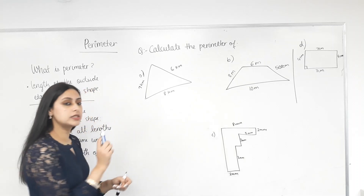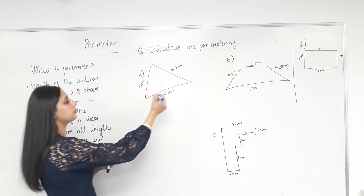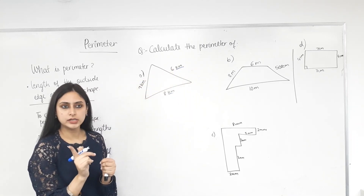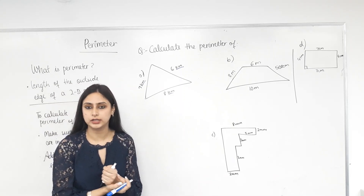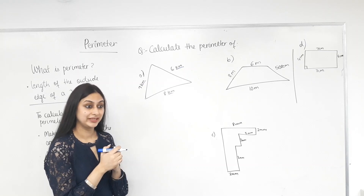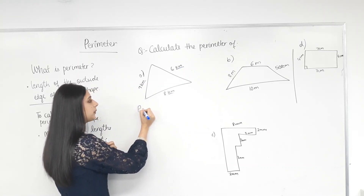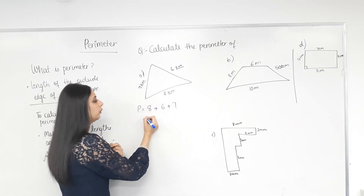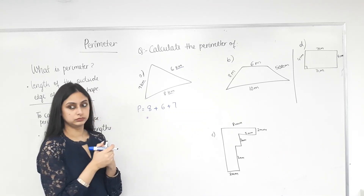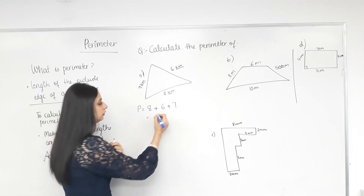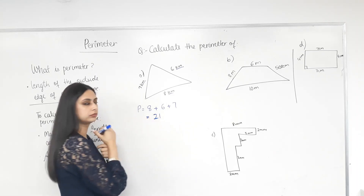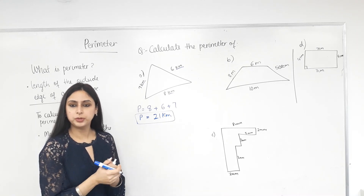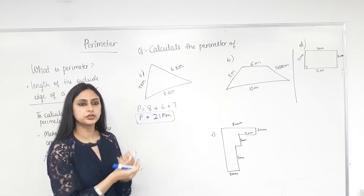The first step is to check if they're in the same units. Calculate the perimeter — kilometers, kilometers, kilometers. Same units, so we can add them. Working out is important; don't just scribble and give me the answer. We write: perimeter P equals 8 plus 6 plus 7, which equals 21 kilometers. Put it in a box. Is that the perimeter of this shape? What shape is this? A triangle, assuming the sides are straight.